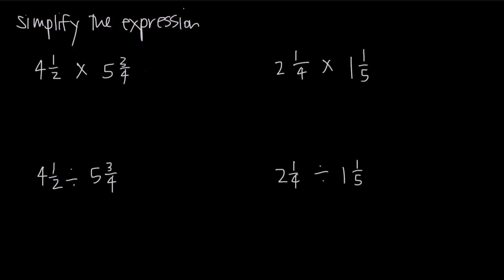In this video, we're talking about multiplication and division of mixed numbers. Remember that a mixed number is a whole number plus a fraction. So when I say 4 and 1 half, I have the whole number 4 and the fraction 1 half, which is halfway between 4 and 5. When we want to multiply or divide mixed numbers, the easiest way is to change the mixed numbers into an improper fraction.